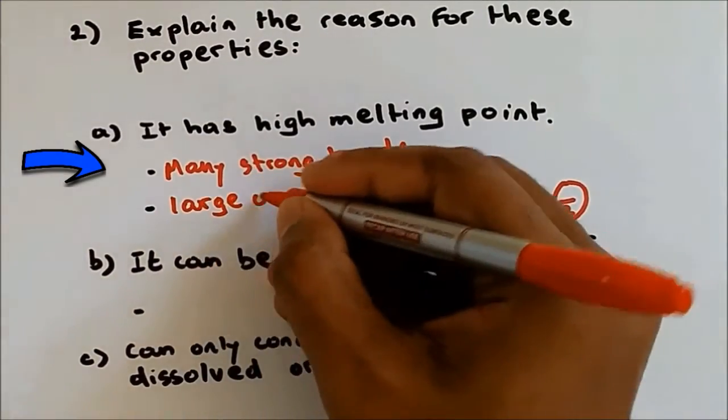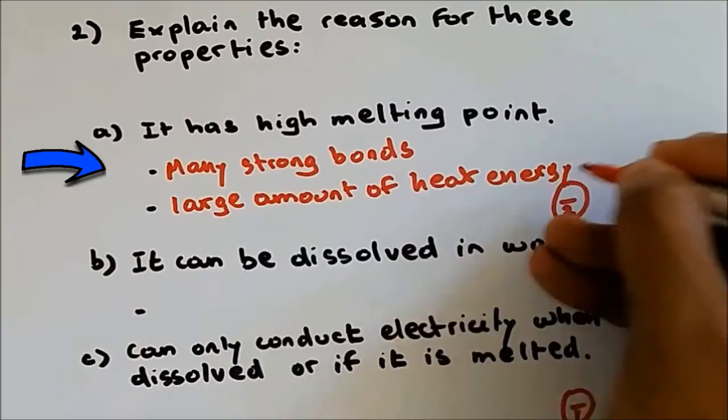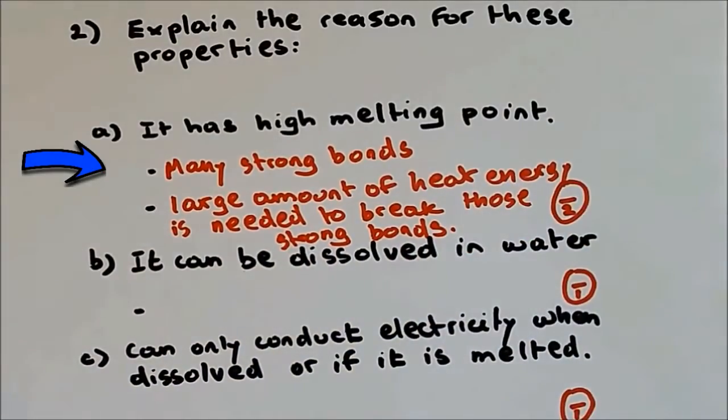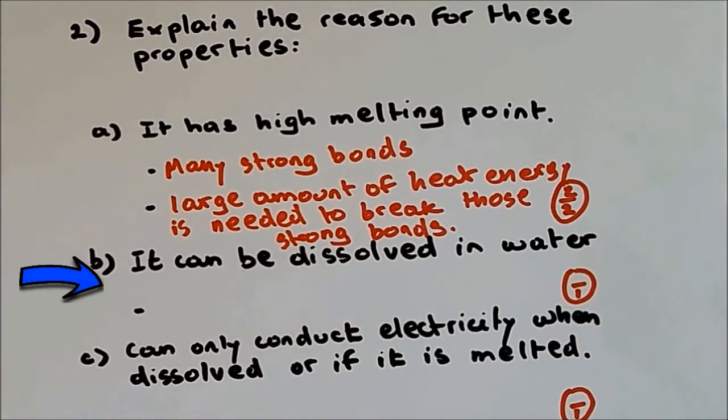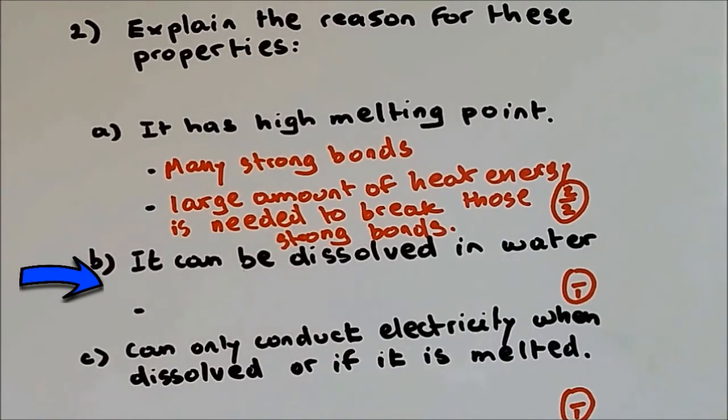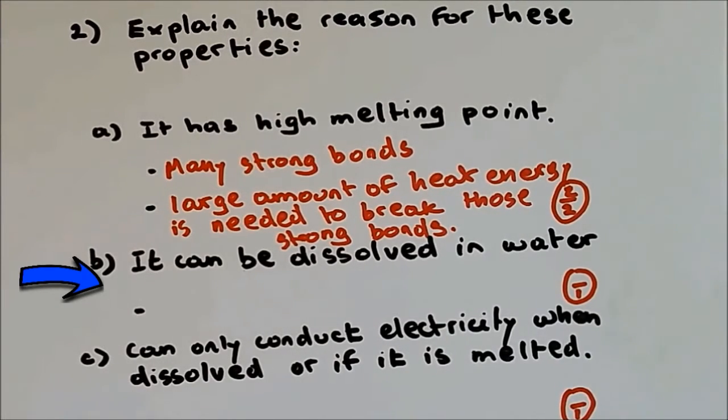Question 2b: Giant ionic structure can be dissolved in water. The reason why it can be dissolved by water is because the structure is made up of ions, and ions can interact with water. So the answer for this question can be written in two ways: you can either say it is made up of ions, or you could say the ions can interact with water.